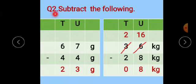Next question. Question number 2: Subtract the following. In that first example, 67 gram minus 44 gram. Now we can easily subtract 4 from 7. So 7 minus 4 is equal to 3 and 6 minus 4 is equal to 2. Answer is 23 gram.